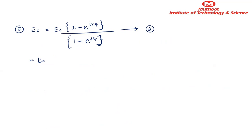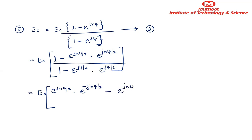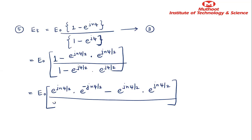Now this is mathematics. I am going to take the numerator (1 − e^(jNψ)) and factor it using e^(jNψ/2), writing it as e^(jNψ/2) · (e^(−jNψ/2) − e^(jNψ/2)). Similarly the denominator 1 − e^(jψ) is factored as e^(jψ/2) · (e^(−jψ/2) − e^(jψ/2)). Please write it along with me.